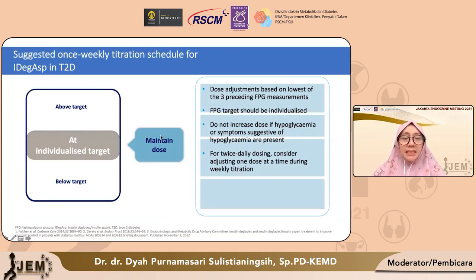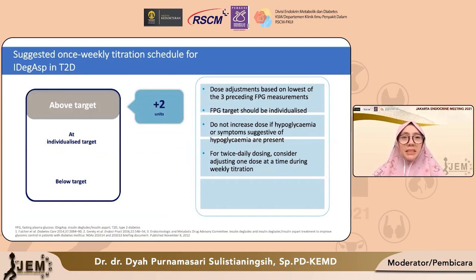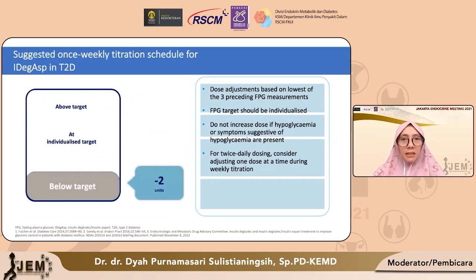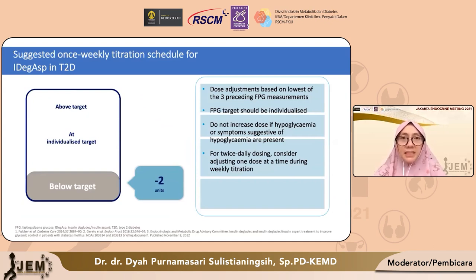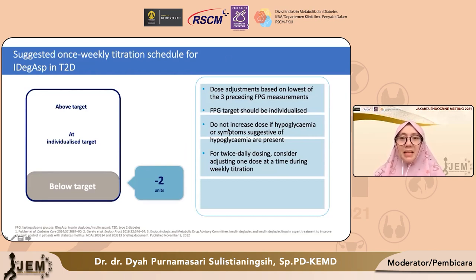Untuk titrasinya, apabila sudah mencapai target individual maka dipertahankan. Tapi kalau belum tercapai, maka kita bisa tambahkan 2 unit setiap minggu. Kalau terlalu rendah, kita bisa kurangi dosis 2 unit seminggu. Jangan meng-adjust menaikkan dosis IDeg-Aspart hanya dari evaluasi 1 kali nilai gula darah yang abnormal, sebaiknya minimal 2 kali. Target gula darah puasa untuk tiap pasien sebaiknya disesuaikan dengan risiko hipoglikemi tiap pasien, dan selama ada gejala hipoglikemi, sebaiknya tidak buru-buru menaikkan insulin IDeg-Aspart.